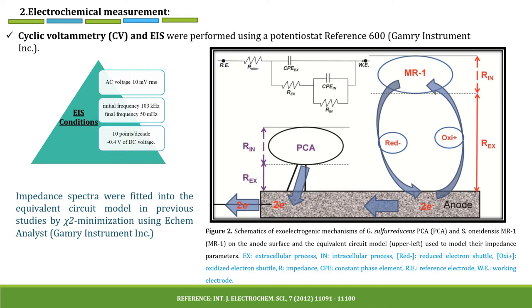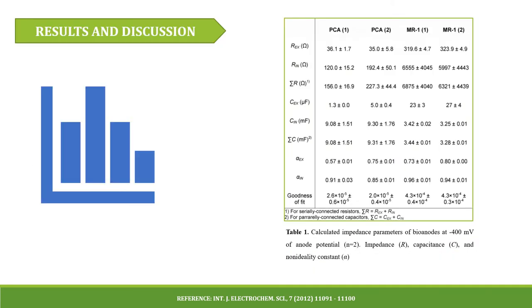Impedance spectra were fitted into the equivalent circuit model from previous studies by chi-square minimization using eChem Analyst. The equivalent circuit model consists of two successive RC time constants as shown in figure 2. A constant phase element was incorporated to model a non-ideal capacitor.